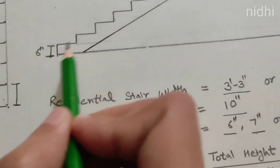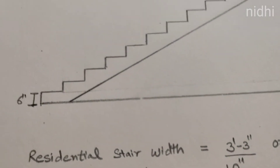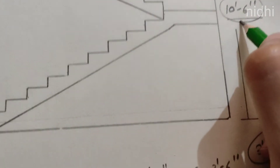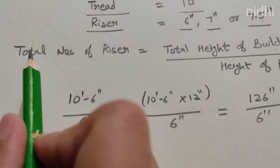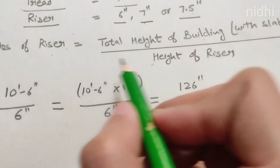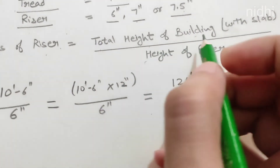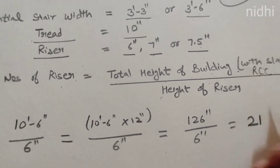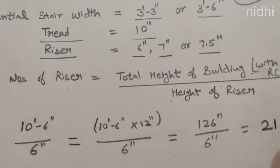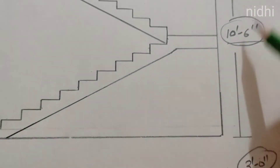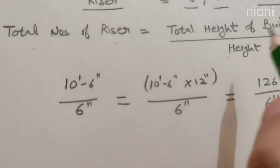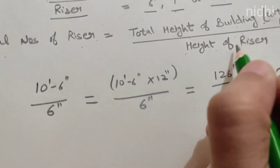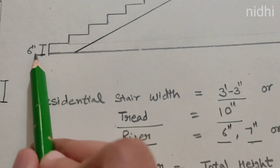How can we calculate the number of risers? First, you have to write the total height of the building, including your RCC slab — slab, landing, whatever term you use. Its height including the RCC slab, and we divide it by the height of the riser, which we are using — 6 inches.